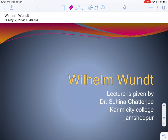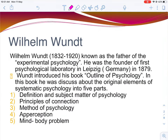Today we will start talking about the contributions of William Wundt. William Wundt has contributed to psychology. This is the third semester of psychology. William Wundt was born in 1832 and died in 1920. He is known as the father of experimental psychology — this is a very important objective question.